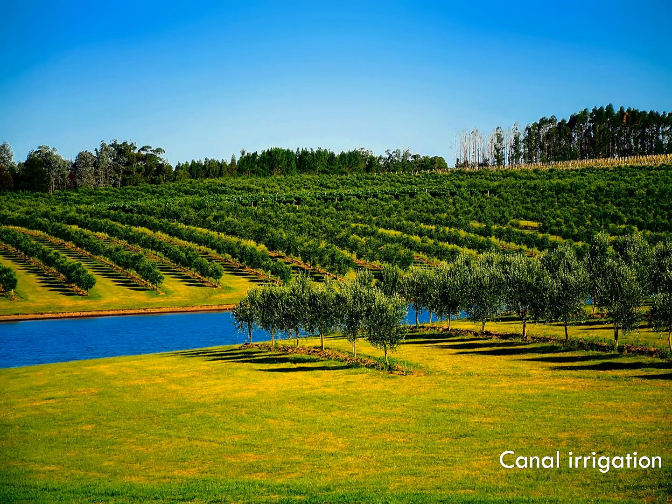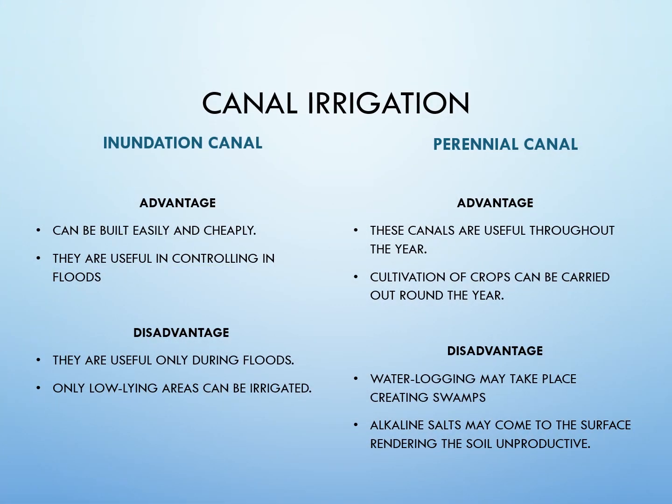Advantages of inundation canals: they are cheap and can be built easily, and they are useful in controlling floods. Disadvantages: they are seasonal and useful only during floods; only low-lying areas can be irrigated. Advantages of perennial canals: they are useful throughout the year and allow year-round cultivation. Disadvantages: waterlogging may take place and create swamps; alkaline salts may accumulate on the soil surface and make the soil unproductive.